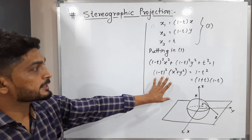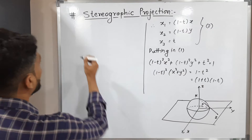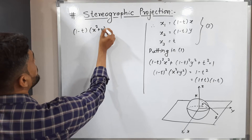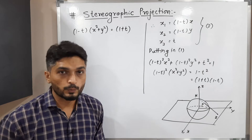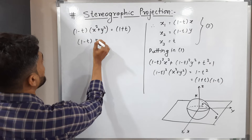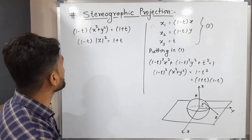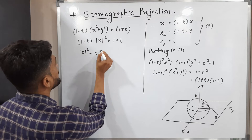After cancelling (1−t), we have (1−t)(x² + y²) = 1 + t. We know that x² + y² = |z|², since the modulus of z equals √(x² + y²). So we can write (1−t)|z|² = 1 + t. Our target is to find the value of t, and we are now very close to it.